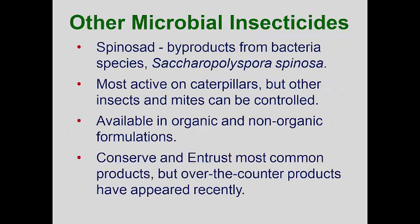There are several other microbial insecticides. Spinosads and spinosyns are chemicals excreted by another soil-dwelling bacterium in the genus Saccharopolyspora. These spinosads can be extracted from fermentation tanks where the bacterium is cultured. They are very good at killing caterpillars and some beetles. The commercial product Conserve is registered for ornamental plant and turfgrass insect control.